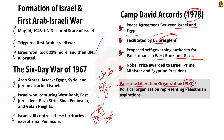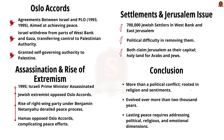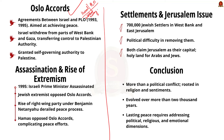The Israeli Prime Minister and Egyptian President were awarded the Nobel Prize for their peace treaty. A political organization called the Palestine Liberation Organization, or PLO, evolved to democratically fight for the Palestinian cause. After Camp David Accords, the Oslo Accords were signed between Israel and PLO in 1993 and 1995, marking the first direct negotiation between leaders of Israel and Palestine. Israel agreed to withdraw its military from parts of the West Bank and Gaza, transferring control to the Palestinian Authority, and agreed to grant self-governing authority to Palestine.